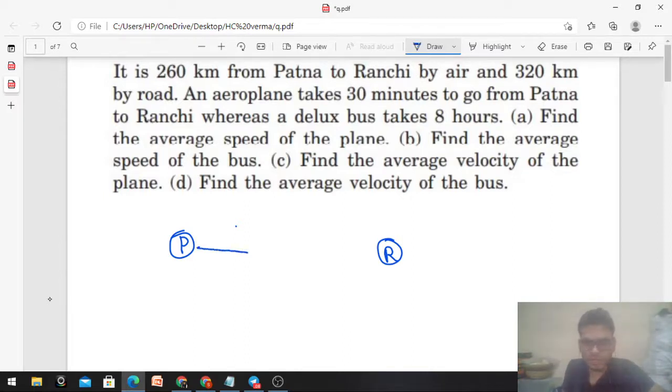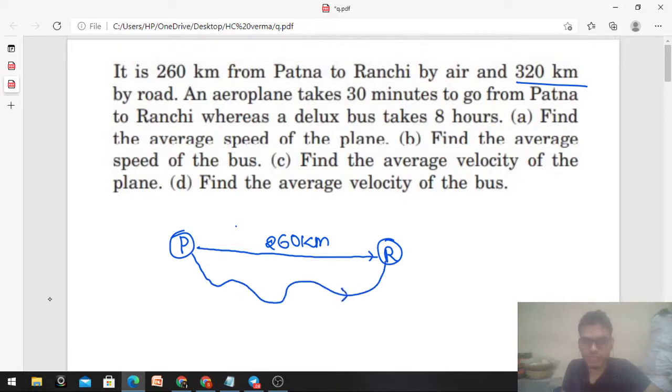So the plane will go straight, which is why its distance is 260 km. And the bus distance is 320 km, so it will not go straight because its distance is much further. It follows other paths. This is 320 km distance, and an aeroplane takes 30 minutes to go from Patna to Ranchi.